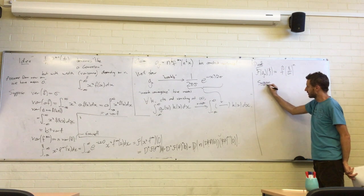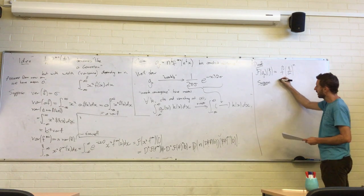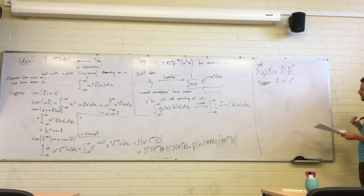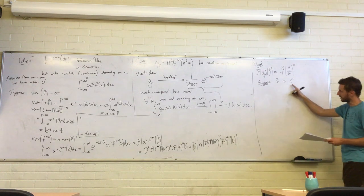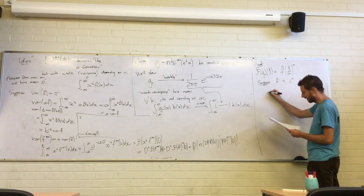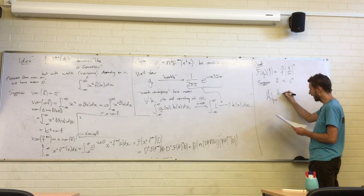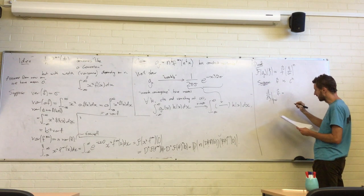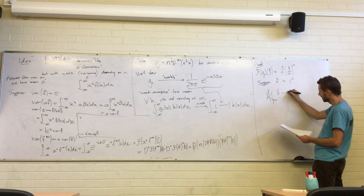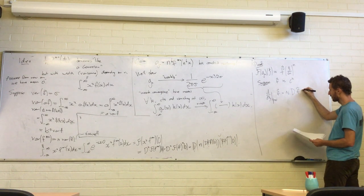Let's suppose — and this is something we haven't proved yet — that f-hat is C². What do we know about the derivatives of f-hat? Well, d/dxi of f-hat at xi equals 0: we can move the d inside, and it's some constant times the integral of x·f(x) dx, which is zero because we assumed our probability distribution has mean zero.